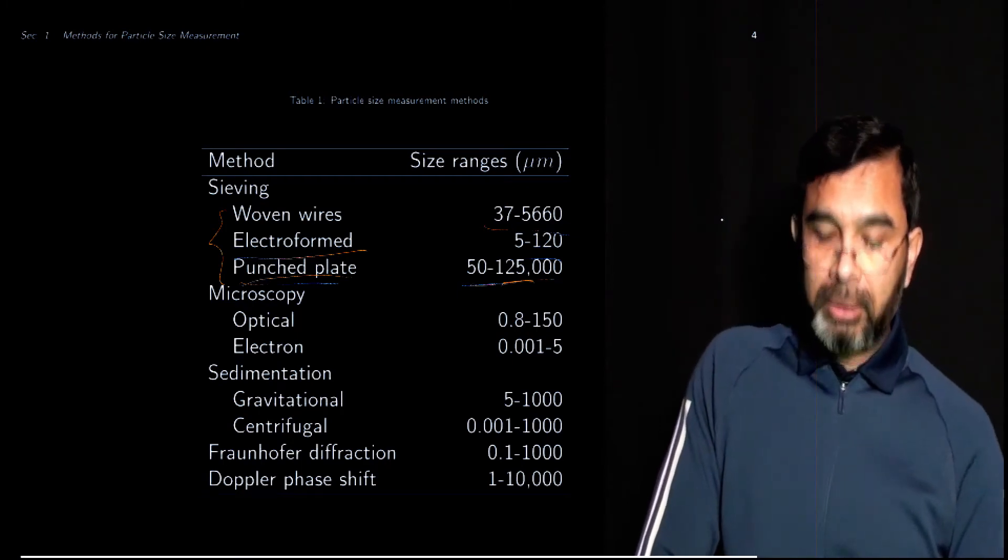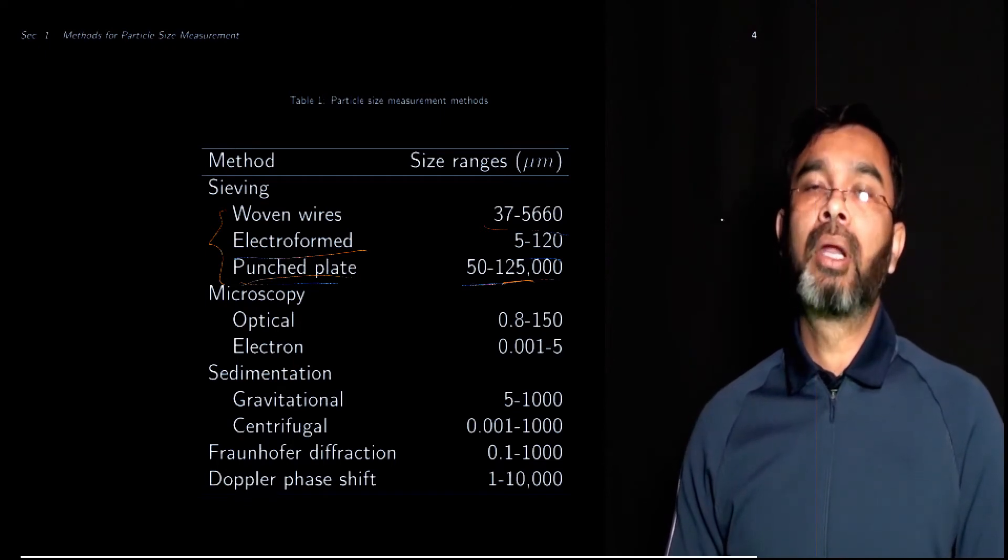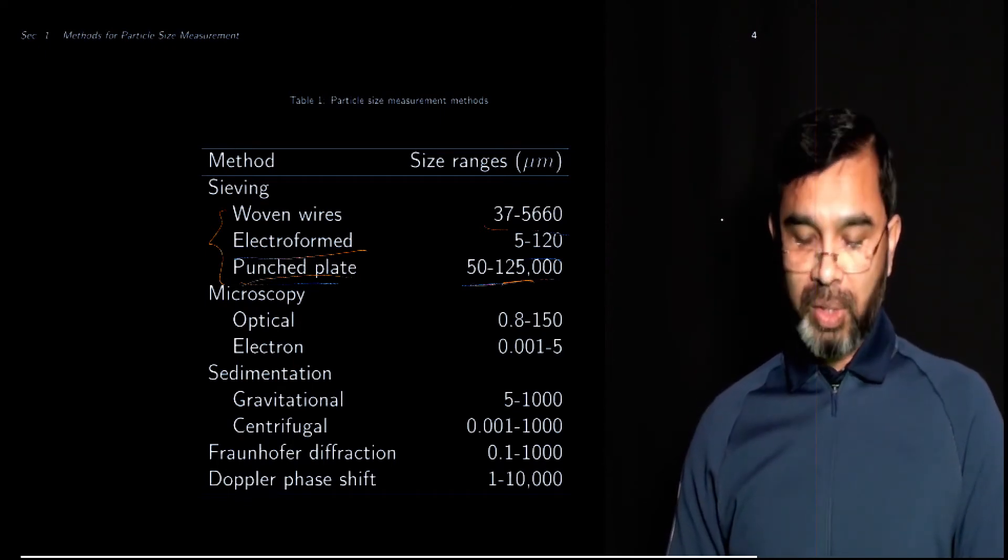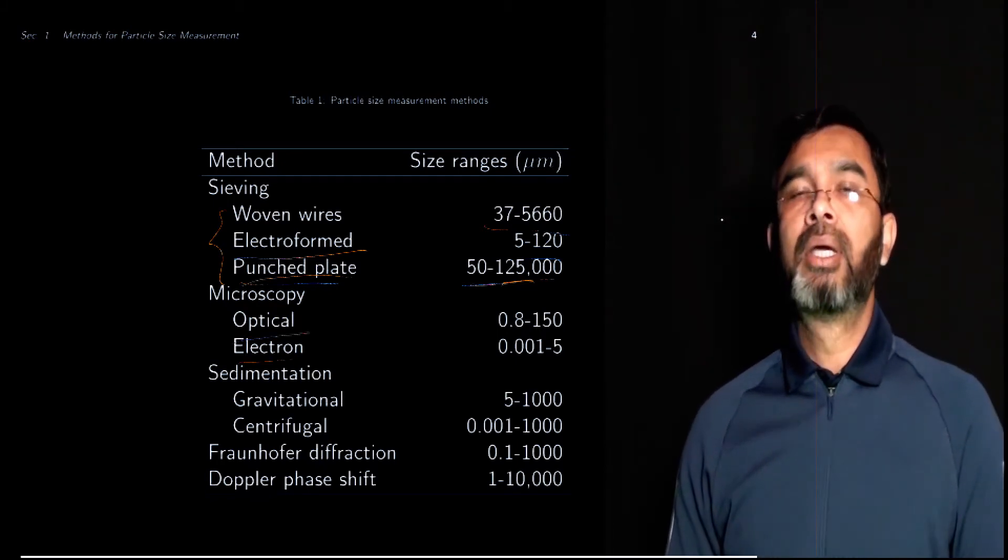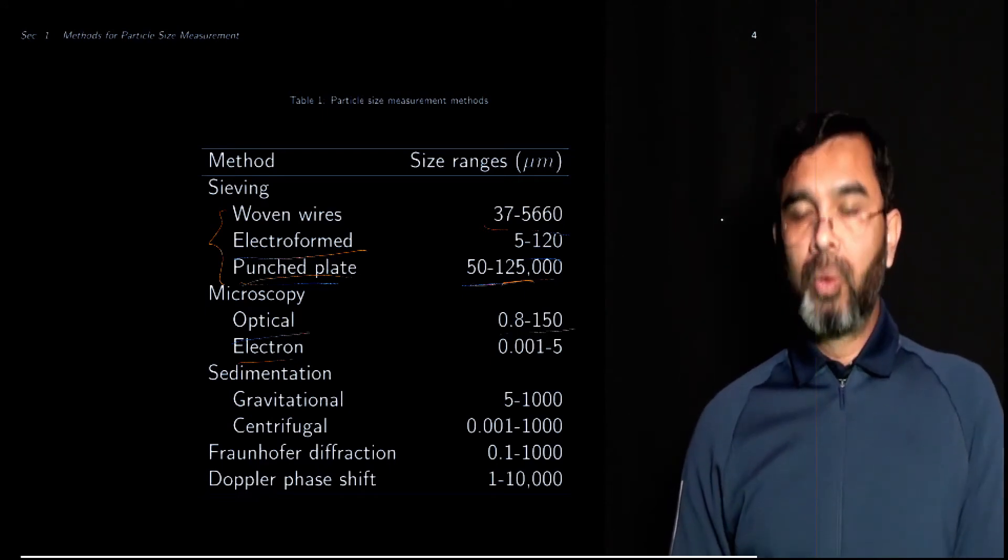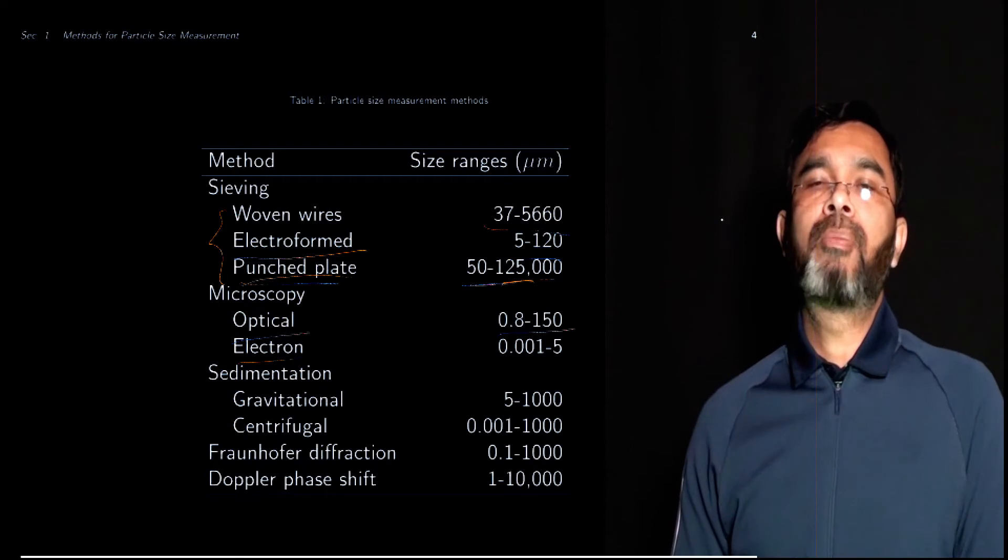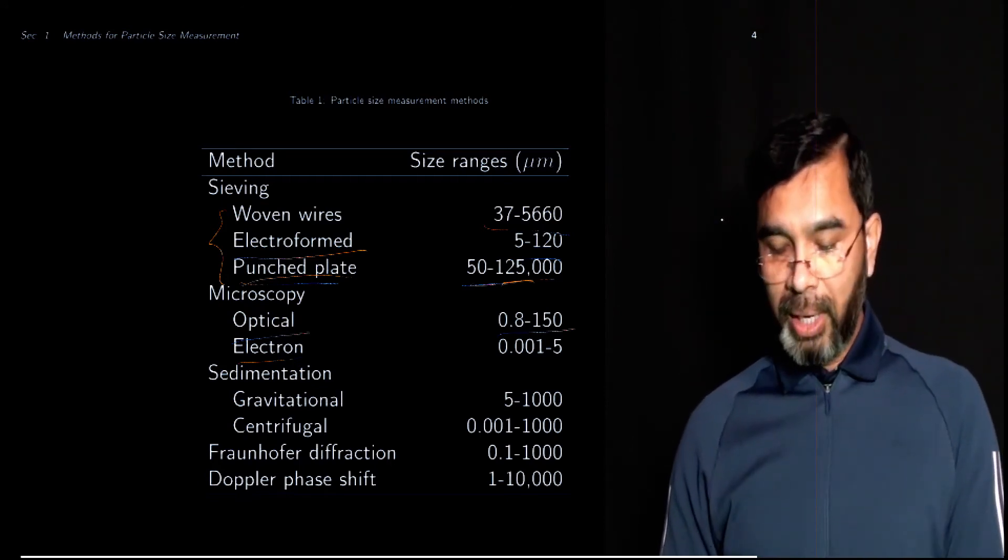Microscopy: there are optical microscopy and electron microscopy. For optical microscopy we measure typically small particles, 0.8 microns to 250 microns, whereas for electron microscopy it ranges between 0.001 microns to 5 microns.